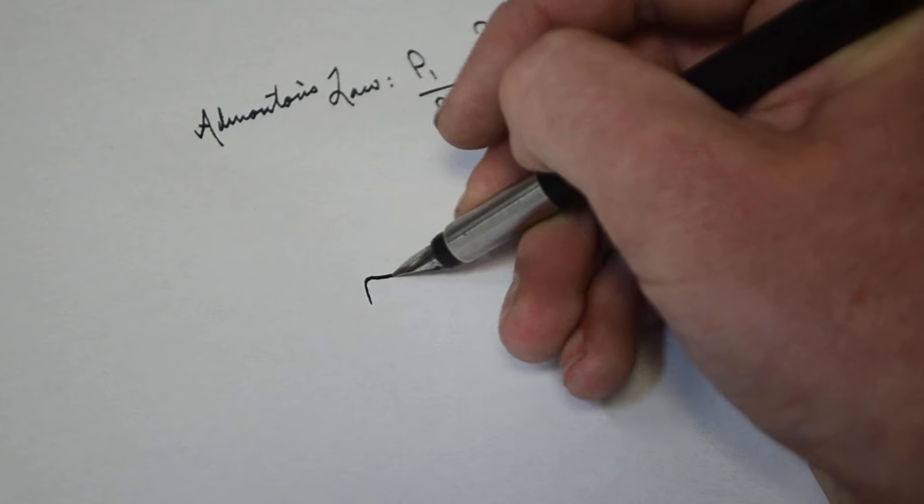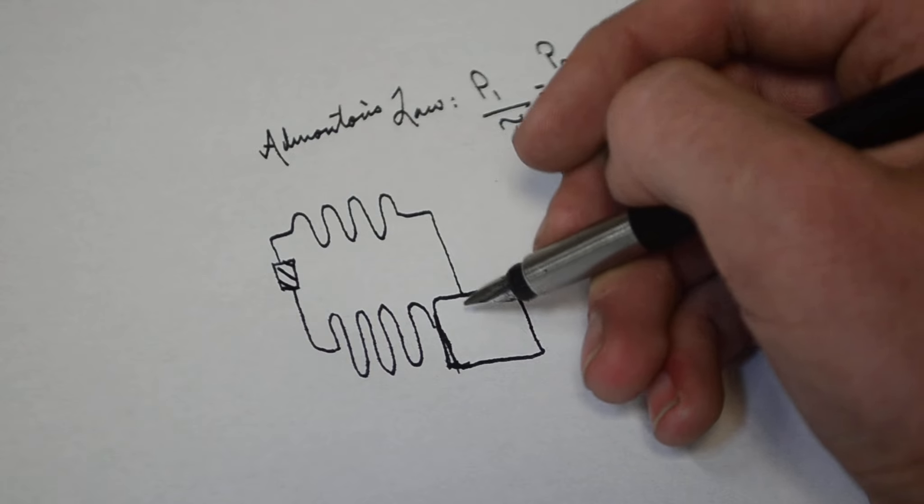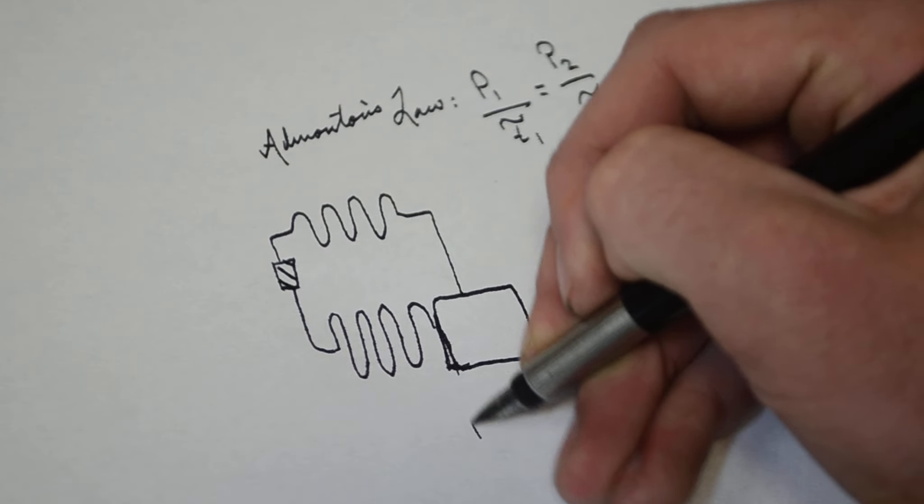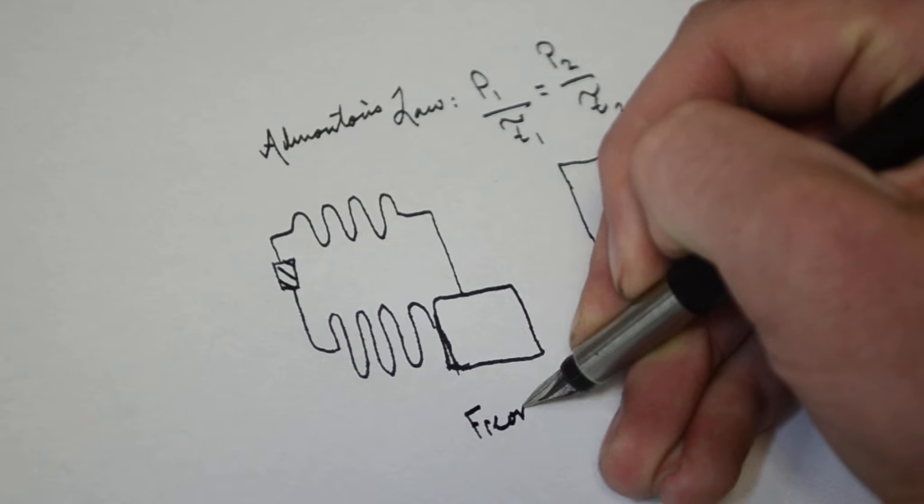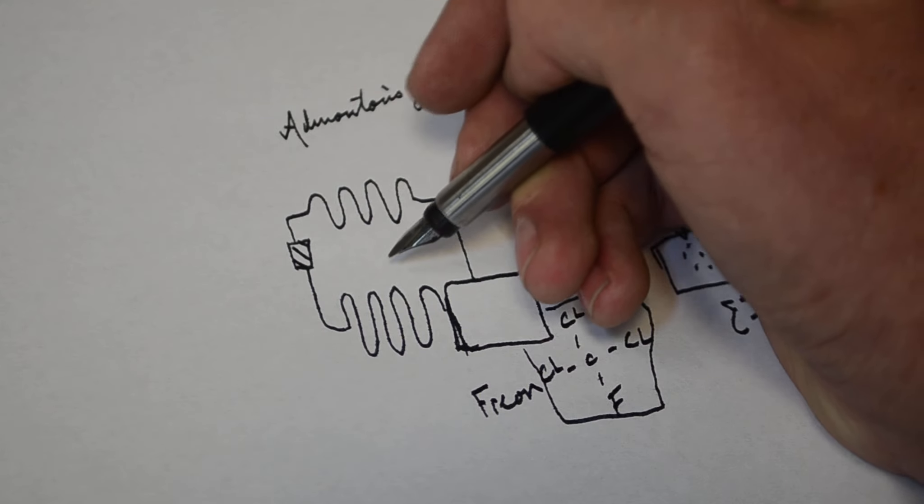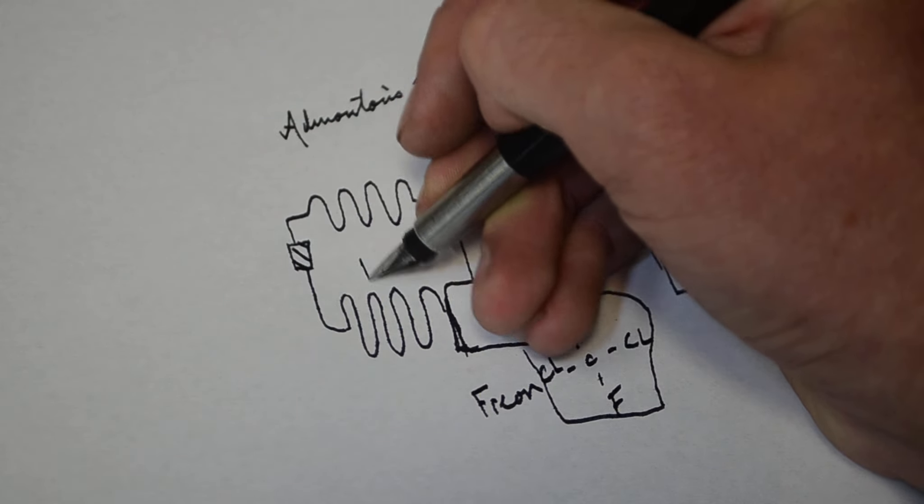In a refrigerator, this works by a piece called the compressor. This compressor will compress a refrigerant, which in most fridges is a substance called freon, which molecularly looks like this. It'll compress it down into a high density state.